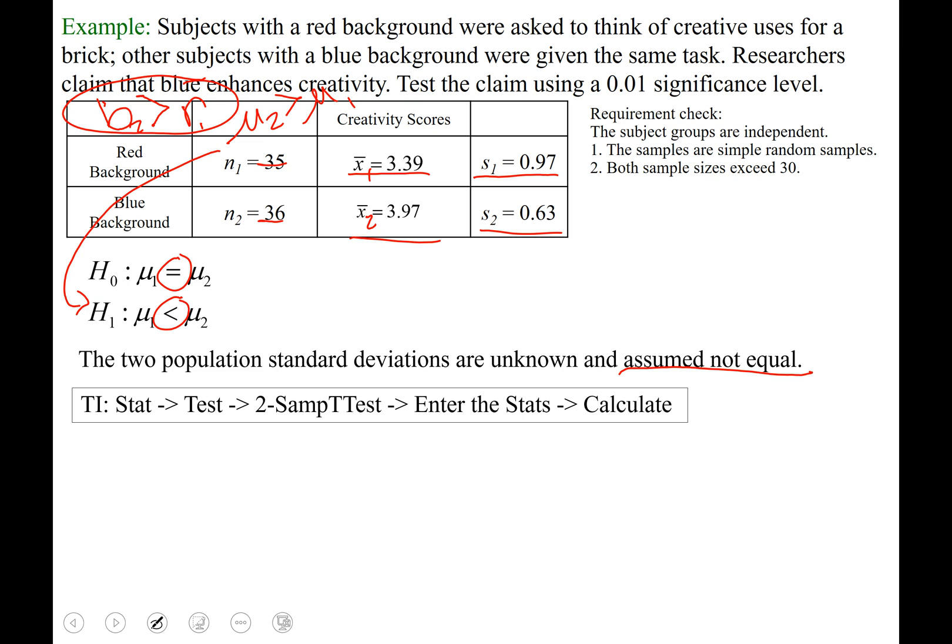And scroll down to two sample t-test. In section 9.1 we used 2 prop z-test to test claims from two populations about proportions. Now we're using 2 sample t-test. Open that program. And we are going to run this off of the stats. We don't have the raw data, we don't have their creativity scores. So make sure stats is highlighted.